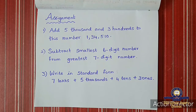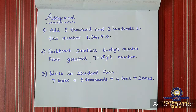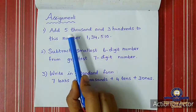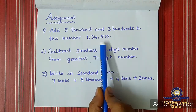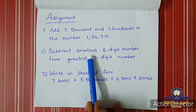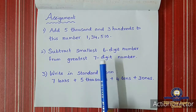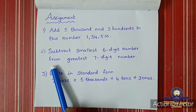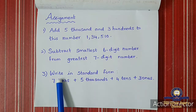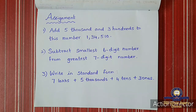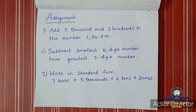Today we saw addition and subtraction. Now take down the assignment. There are three sums: first, add 5,300 to a given number and find the answer. Second, subtract the smallest 6-digit number from the greatest 7-digit number. Third, write a number in standard form. Do these in your rough note and submit in the WhatsApp group or classroom app. Many students are not submitting assignments — I want everybody to submit. Thank you children, bye.